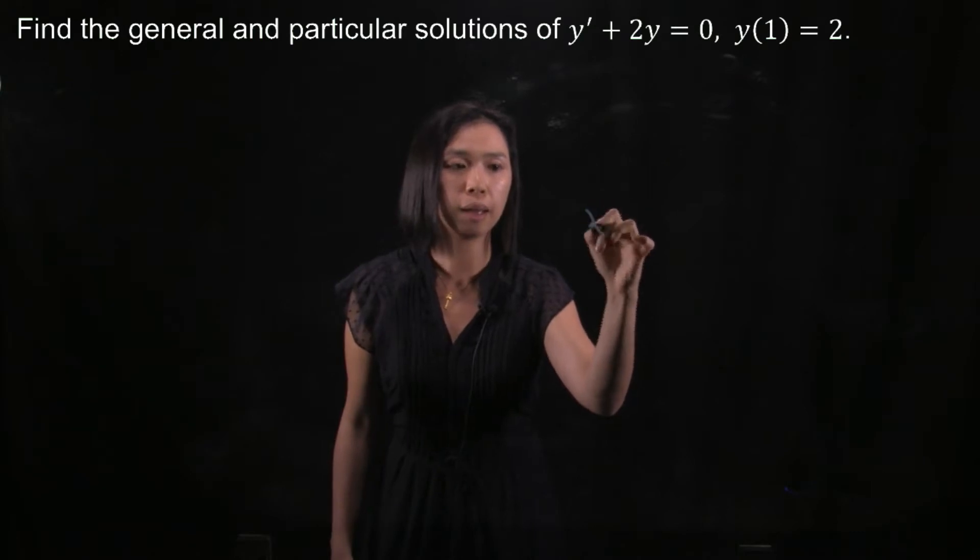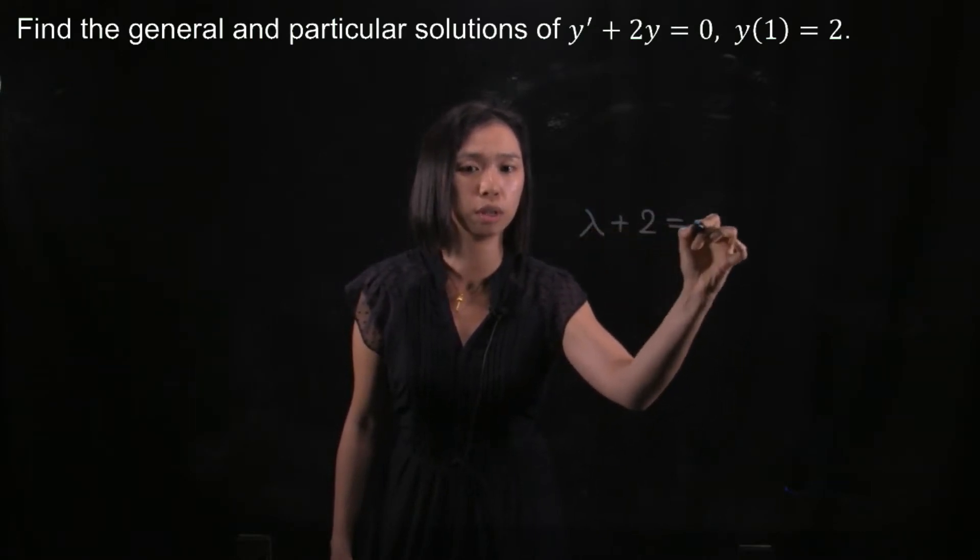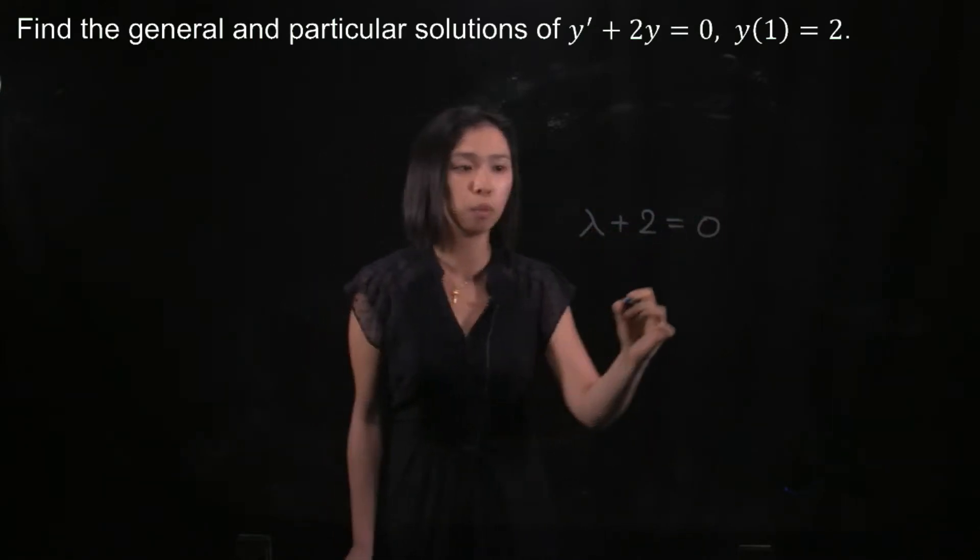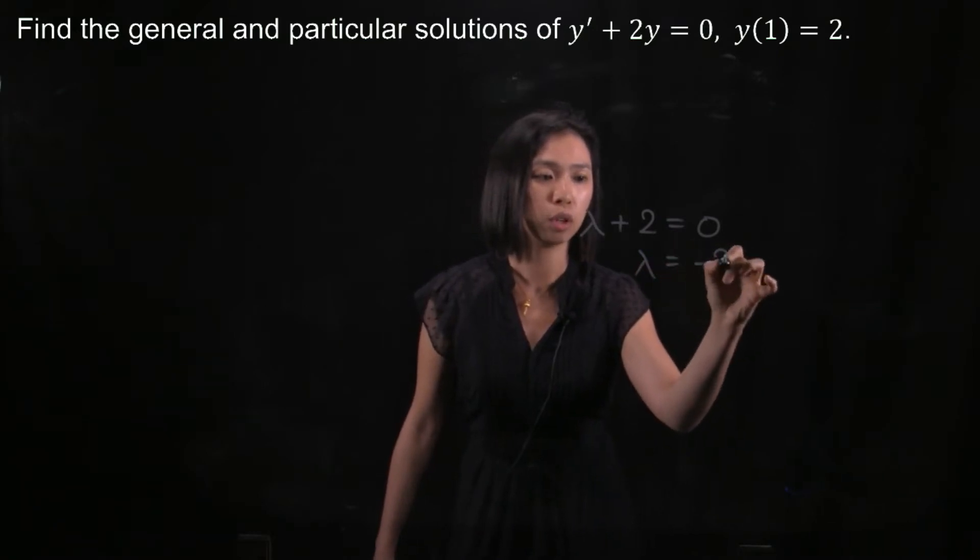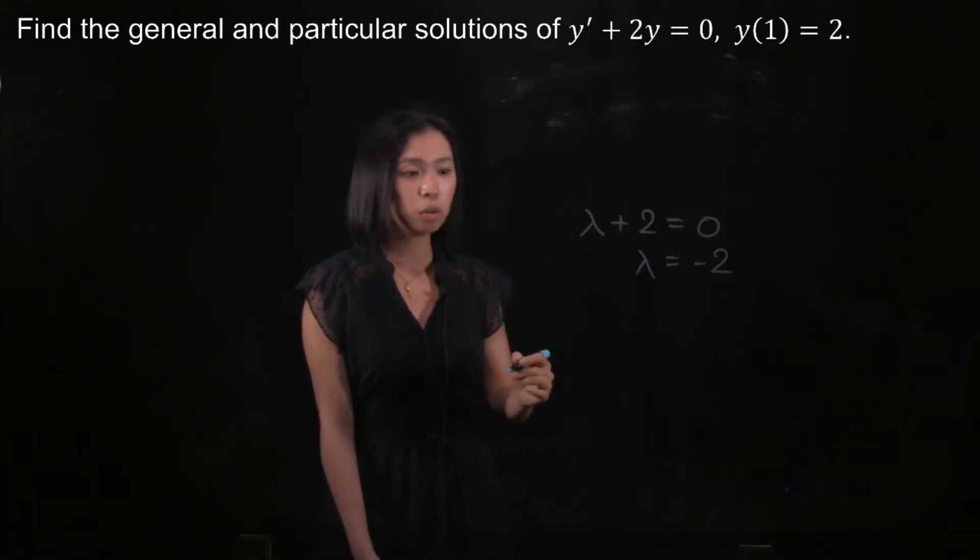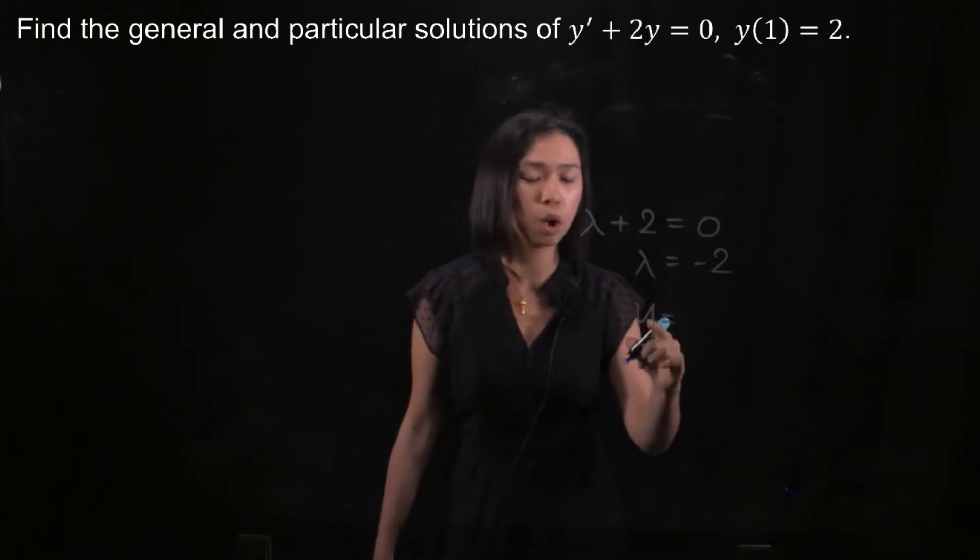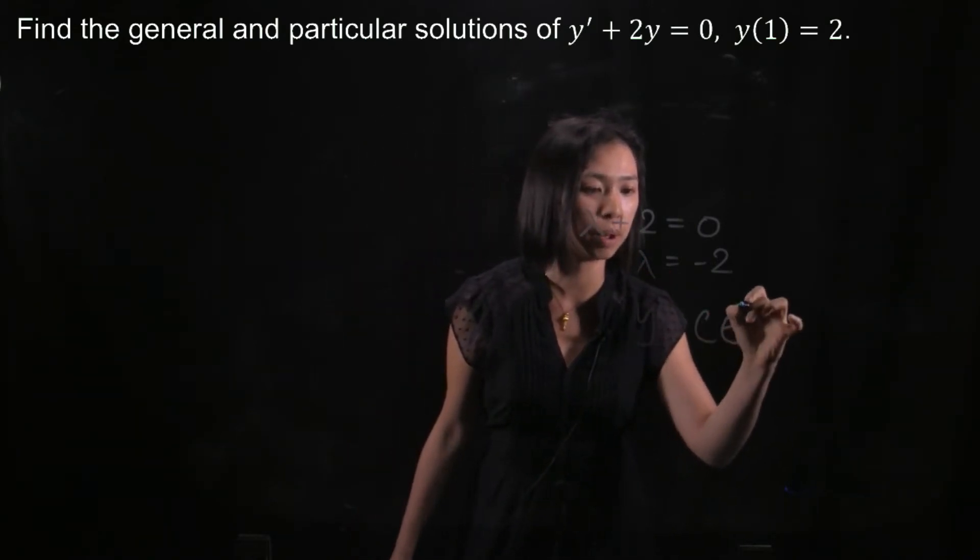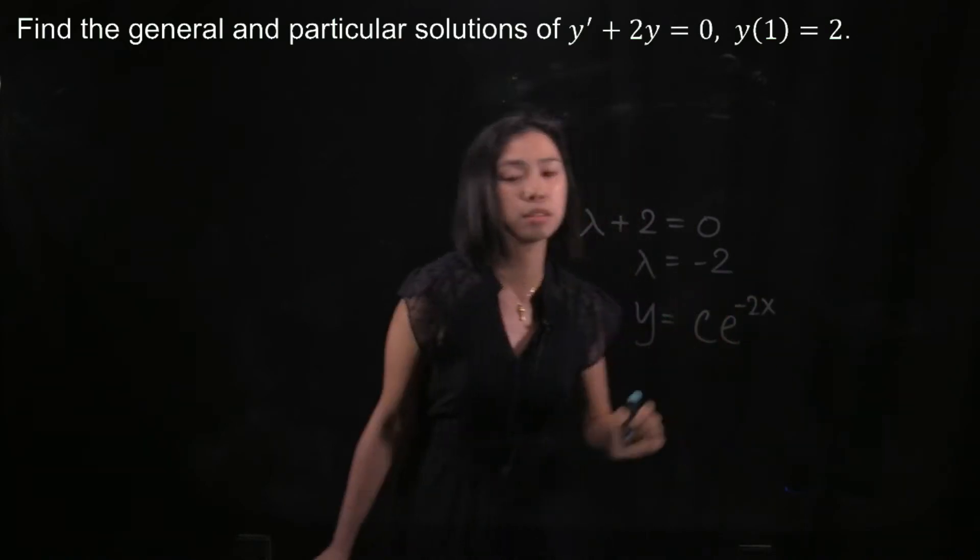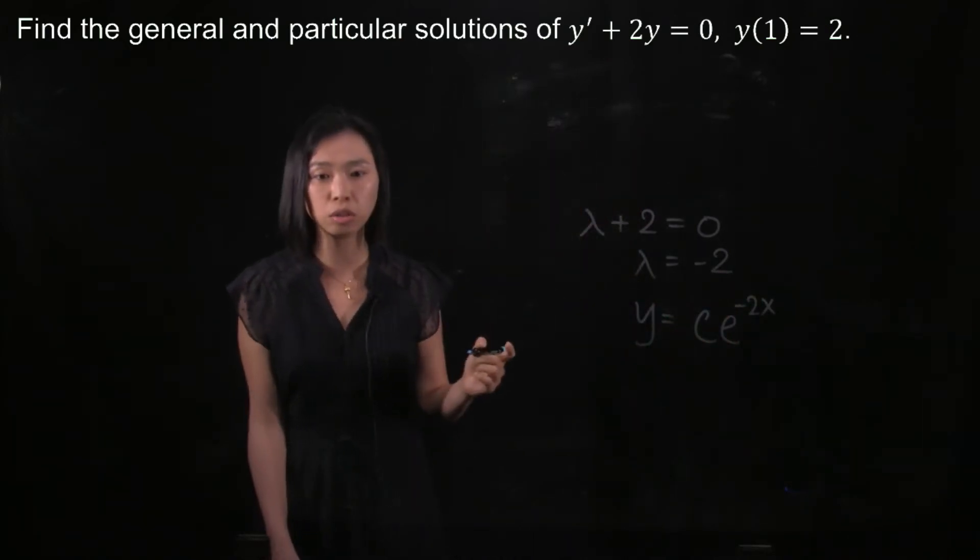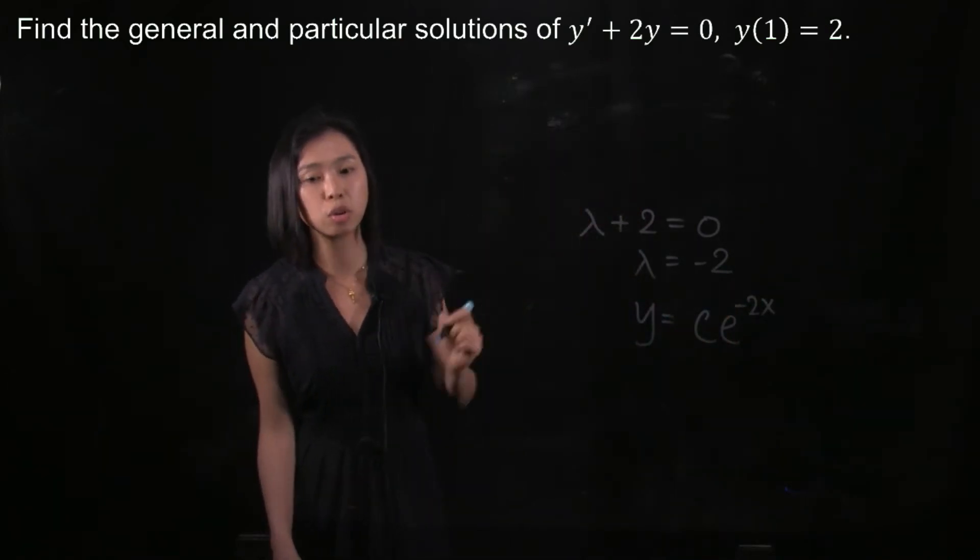So we will have λ + 2 = 0, and then we will have λ = -2. So we know that the solution to this differential equation is y = Ce^(-2x). So this is the general solution to this differential equation.